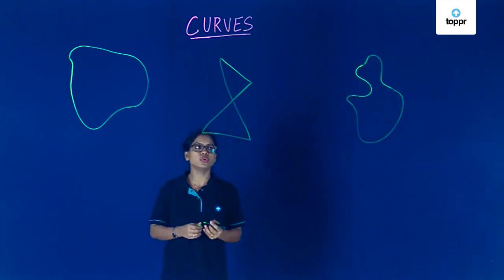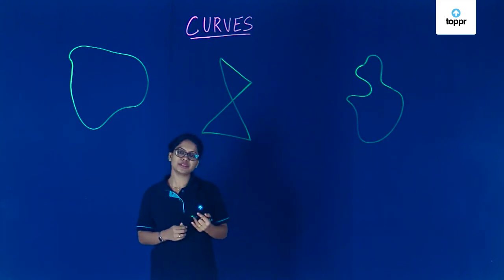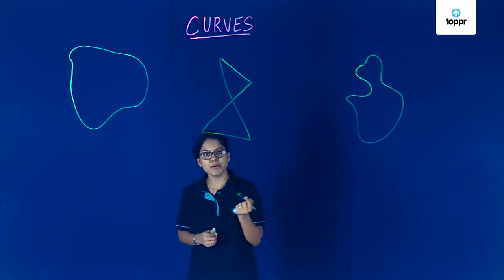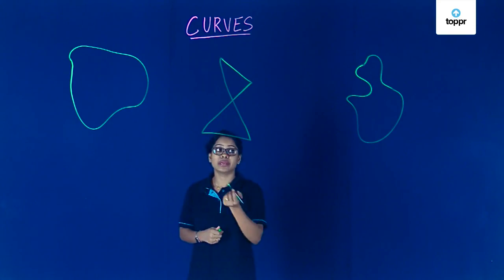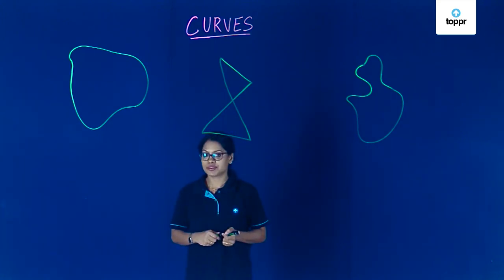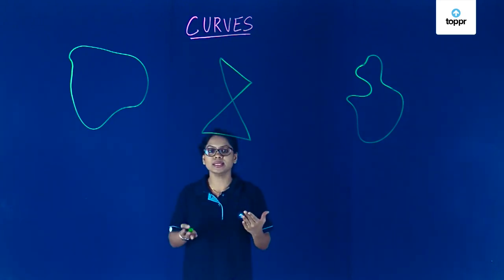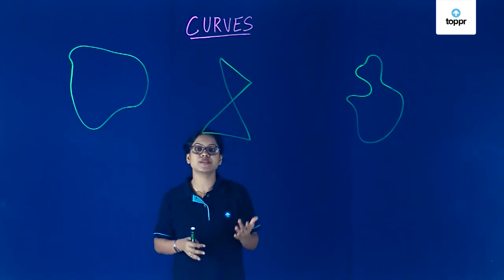Now what we're going to do is in each of these curves, we'll try to trace the starting point and the end point. Now can you tell me where I started and where I ended? It's difficult, right? And why is it difficult? Because the starting and the end point of all these curves are the same.